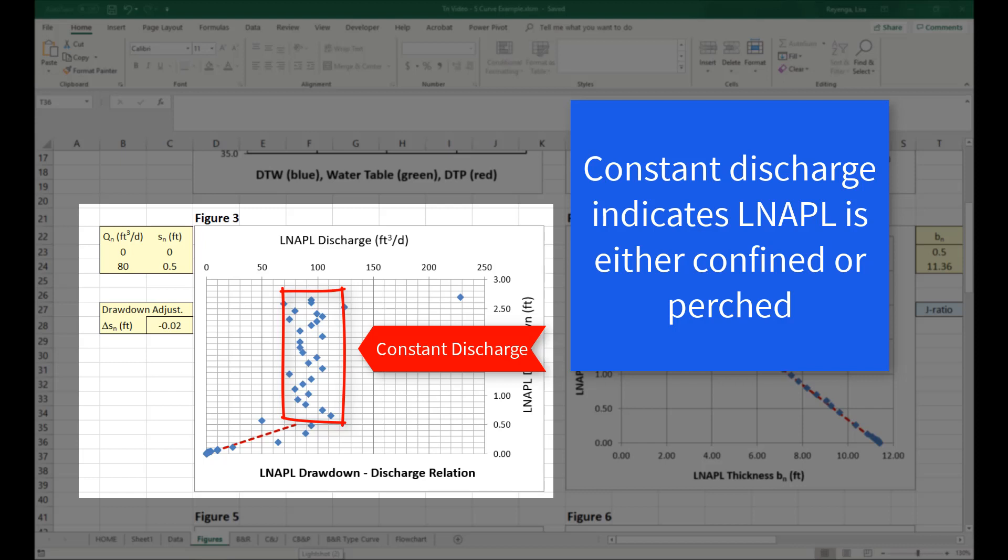Filtering data can help realize periods of constant discharge where data measurement frequency was high relative to changes in fluid levels and gauging error. LNAPL transmissivity for confined or perched data sets can be analyzed in two ways.